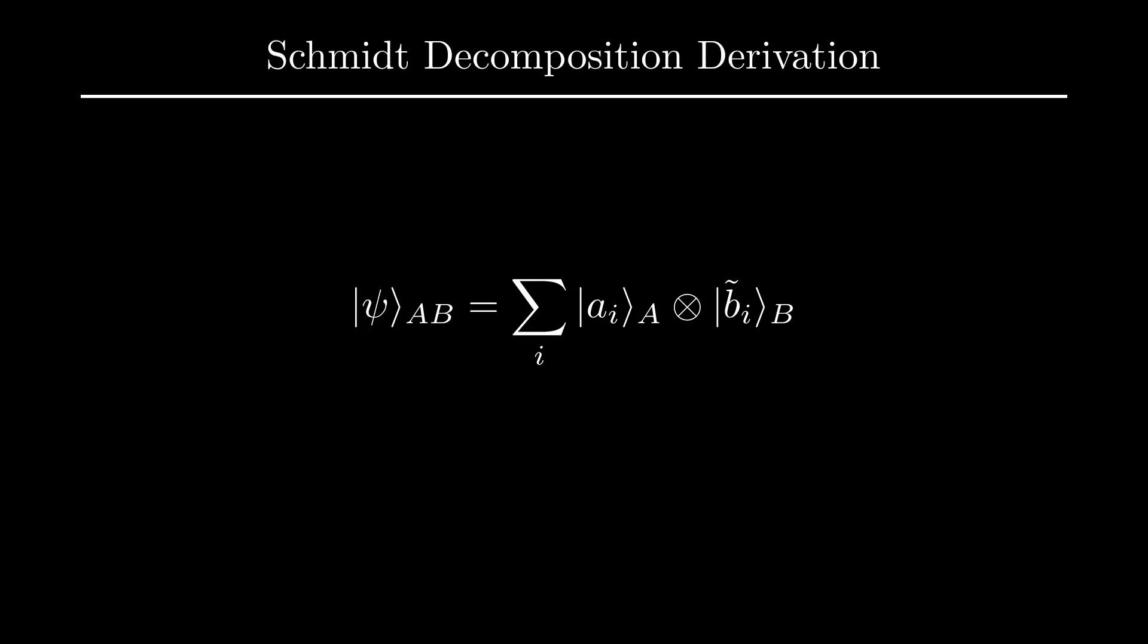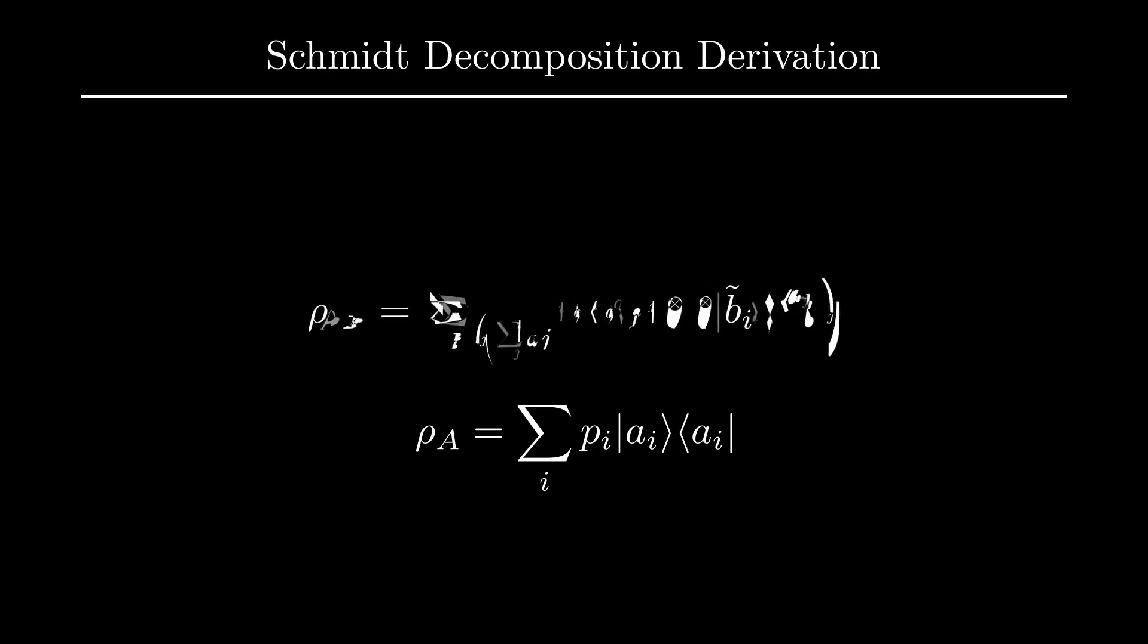When we compute the state of system A from the state psi, we will, of course, get the density matrix rho A. Choose the AI vectors to be the diagonal basis of this density matrix, where AI has eigenvalue PI corresponding to a probability value or weight, allowing us to decompose rho A as follows. Let us now take the partial trace of psi over B to recover what rho A should be in terms of the states we have used to define psi.